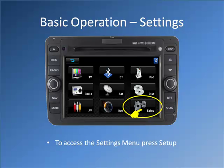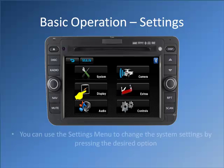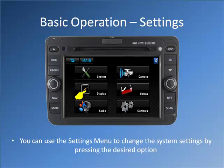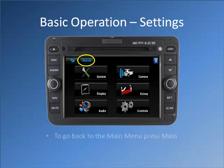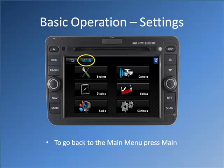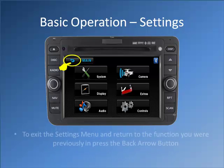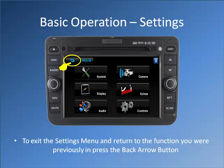To access the settings menu, press Setup. You can use the settings menu to change the system settings by pressing the desired option. To go back to the main menu, press Main. To exit the settings menu and return to the function you were previously in, press the back arrow button.